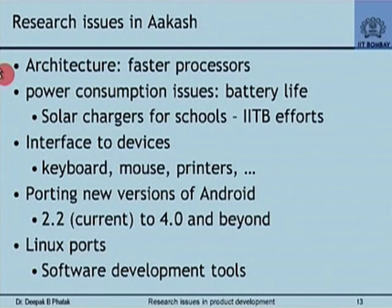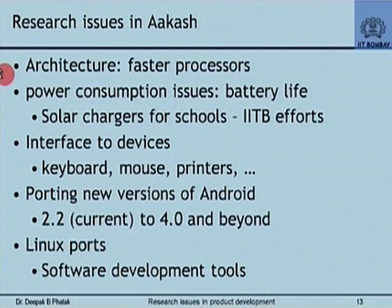Eventually we envisage that tablets will have a full-fledged operating system once they evolve to have larger processing power, much larger memory, and much larger internal storage. For example, I would expect an Akash tablet next year to have a 4-core processor giving around 1 GHz × 4 computing power, at least 1 GB of main memory, at least 32 GB of internal storage — all available for something like 3,000 to 4,000 rupees. The usage must be anticipated and the R&D must be started today. There would be Linux ports and software development tools required.